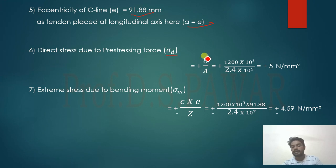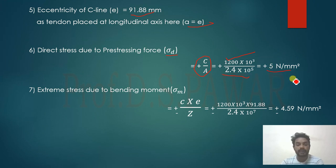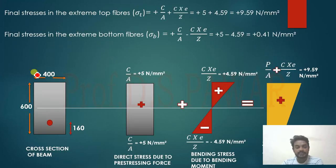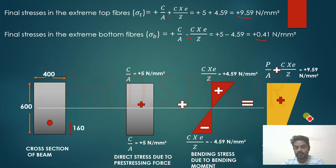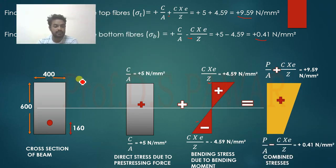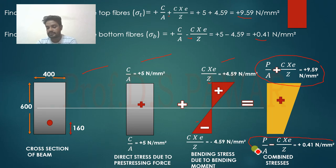Calculating stresses: Direct stress = C/A = 1200 × 10³ / (2.4 × 10⁵) = 5 N/mm². Bending stress = ±C·e/Z = ±(1200 × 10³ × 91.88) / (2.4 × 10⁷) = ±4.59 N/mm². Final stresses: top fiber = 5 + 4.59 = 9.59 N/mm², bottom fiber = 5 − 4.59 = 0.41 N/mm². These values are shown in the stress diagram displaying direct stresses, bending stresses, and combined (final) stresses.